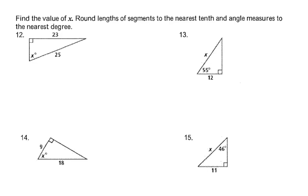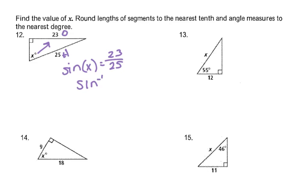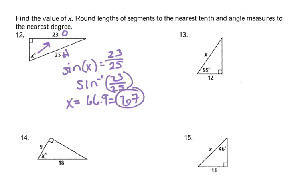Welcome back. Let's see how well you did. This is opposite over hypotenuse, so sine X equals 23 over 25. Remember, because we're finding an angle, it will be the inverse. So sine negative 1 of 23 over 25 — put it in our calculators — X equals 66.9, which rounds to 67 degrees.